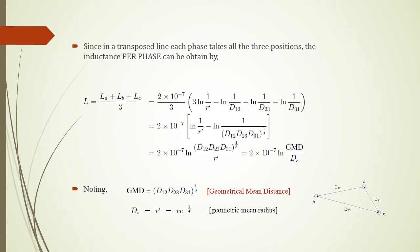With transposition, we calculate the average inductance per phase. The formula uses the geometric mean distance GMD, which represents the average distance between phases. GMD = (D_ab × D_bc × D_ca)^(1/3). We also use the geometric mean radius GMR, or Ds. For conductors with the same radius, Ds = r' = r × e^(−1/4) = 0.7788r.